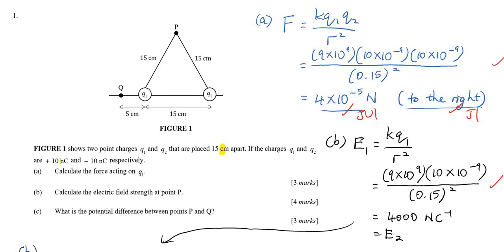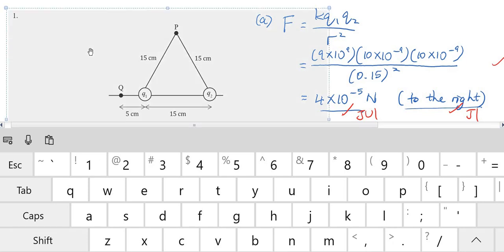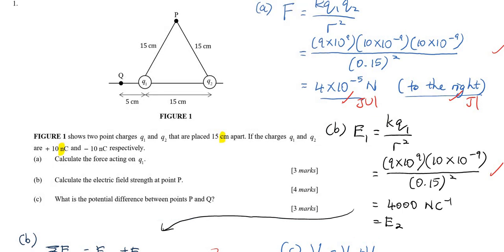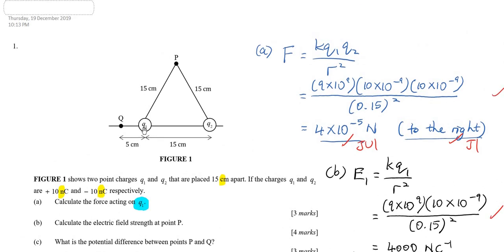Please pay attention to the unit — nano. Calculate the force acting on q1 only, not both charges. So here we have two point charges. q1 is a positive charge — please take note about the sign of the charge.